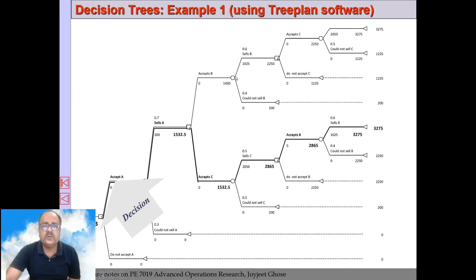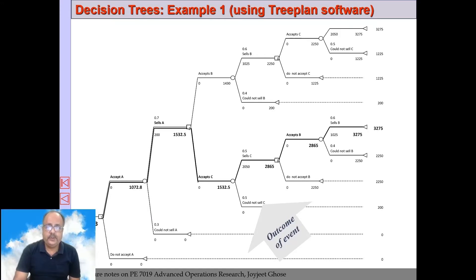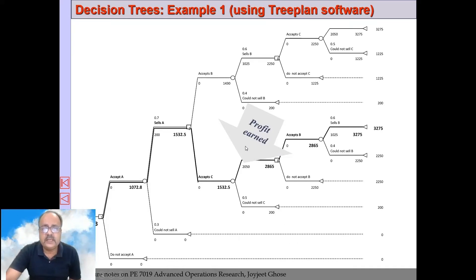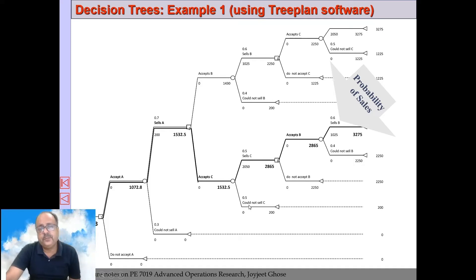These are all chance nodes — a circle denotes chance and a square denotes a decision node. The triangle is a terminal node, and the line leading to it is a terminal branch. These terminal nodes represent outcomes of events — such as sells or does not sell. Probabilities are assigned to each chance branch; for example, 0.6 is the probability of selling and 0.4 the probability of not selling.